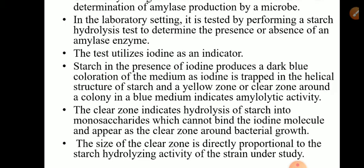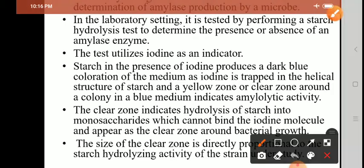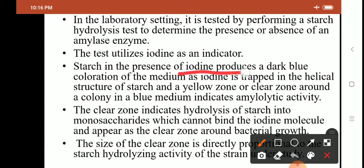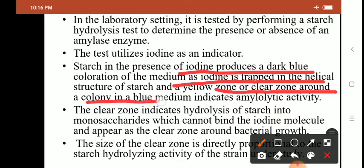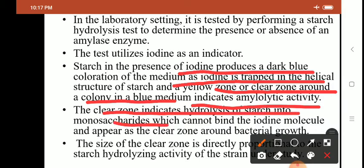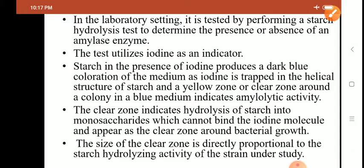If there is no clear zone surrounding the colony and the whole plate turns blue, then organism is amylase negative. The size of the clear zone of hydrolysis is directly proportional to the amount of amylase produced and the starch hydrolyzing activity of the organism. The clear zone indicates hydrolysis of starch into monosaccharides which cannot bind the iodine molecule. Starch in the presence of iodine produces dark blue color as iodine is trapped in the helical structure of starch. A yellow or clear zone around a colony in a blue medium indicates amylolytic activity — that means amylase-producing activity of an organism.